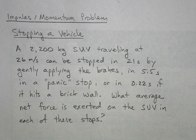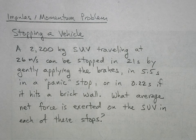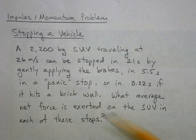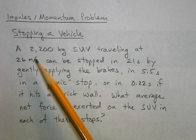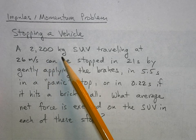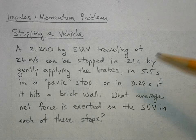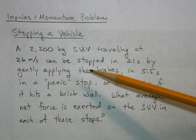Let's work an impulse momentum problem where we're going to stop a vehicle, a big SUV. We've got a 2,200 kilogram SUV, that's about 5,000 pounds, traveling at 26 meters per second.